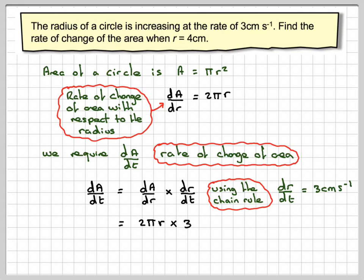So that's going to be 2 pi r, because dA by dr is 2 pi r times the 3, so it's going to give 6 pi r. So what we've got is dA dt is 6 pi r, so that's a differential equation which gives me the rate of change over time.